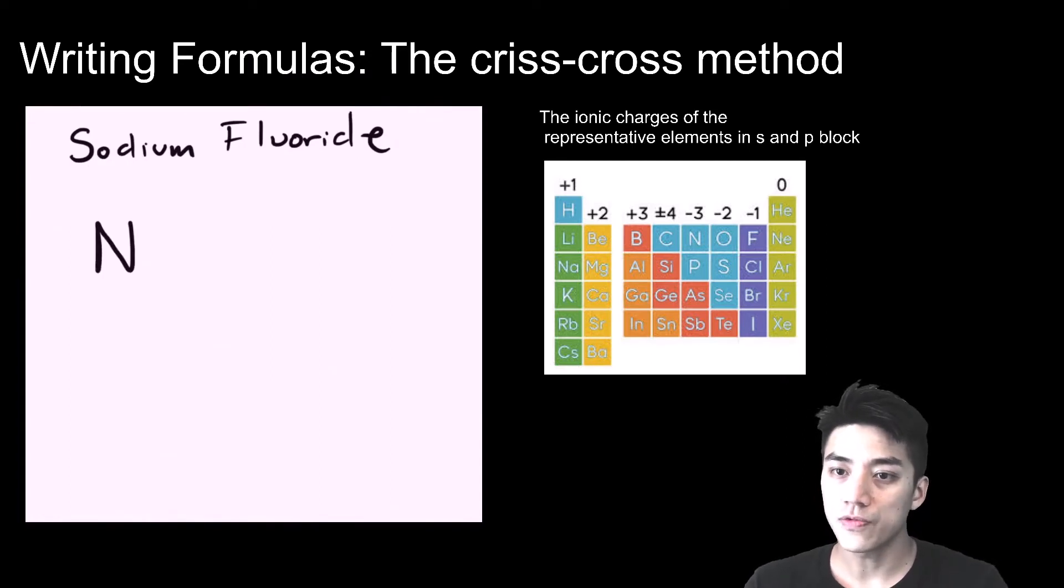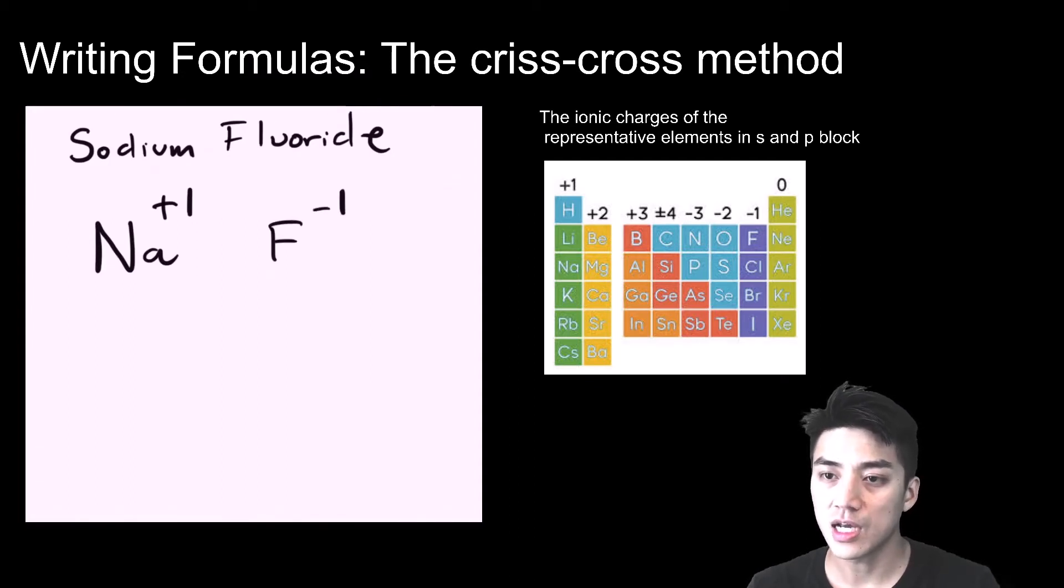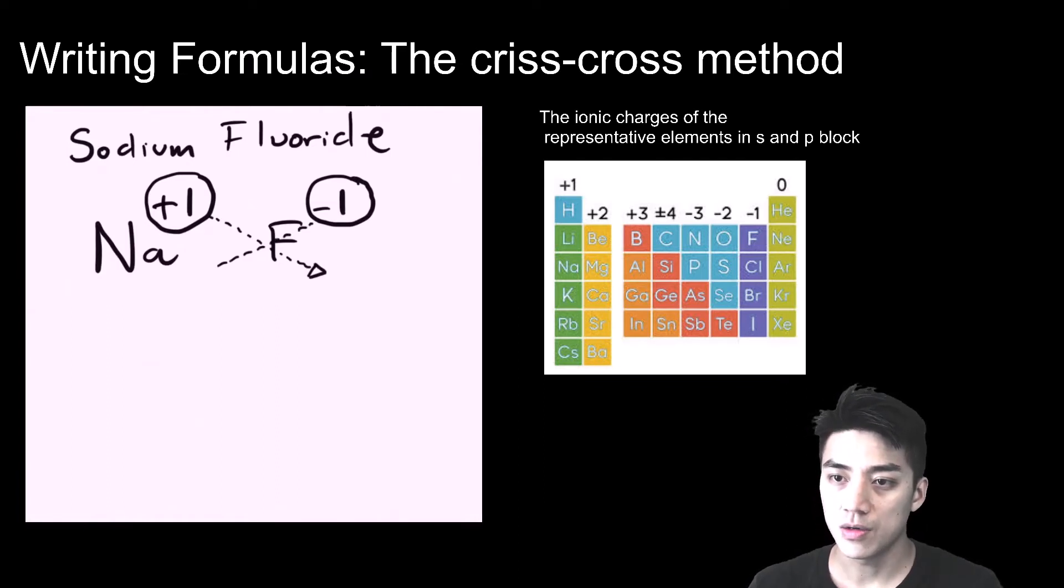Write the formula for sodium fluoride. Start by writing the symbol Na, it's a plus one charge. Fluorine has a symbol F and its charge is negative one. Now I'm going to circle these charges because I will criss-cross them. I'm going to cross the plus one over to fluorine, I'm going to cross the negative one over to sodium but I will omit their signs. So now I have Na1F1 and I will also omit the ones, leaving me with NaF for the formula of sodium fluoride.